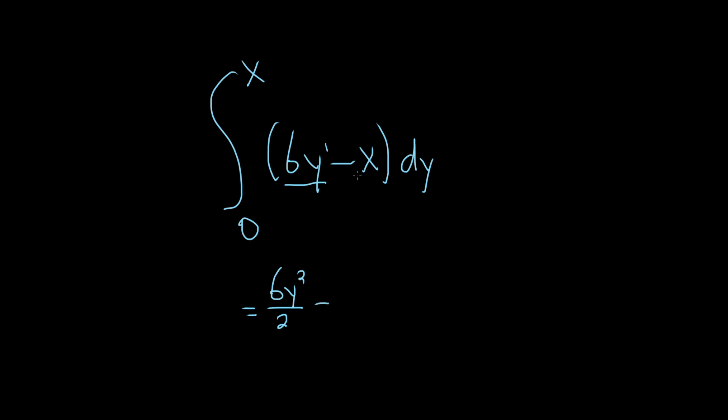And then minus, and this x is basically like a constant, so when you integrate it, you're just going to get x times y. Like if it was a 2, you'd get 2y. If it was a 3, you'd get 3y. It's an x, so you'd just get xy.